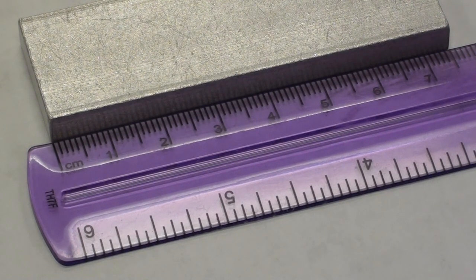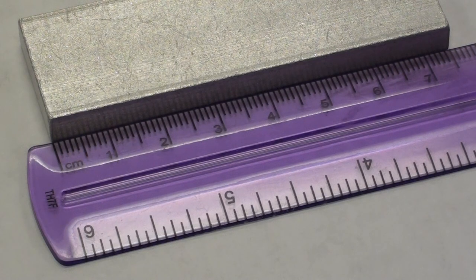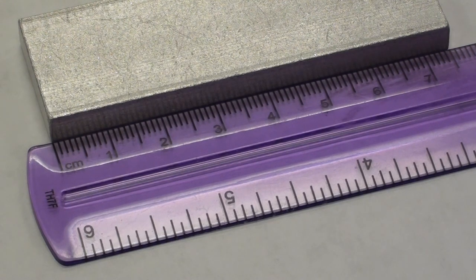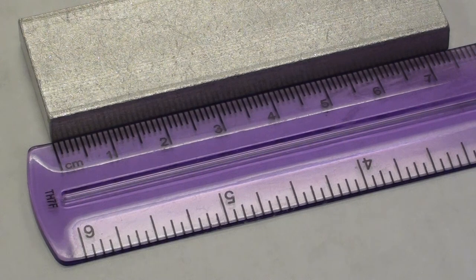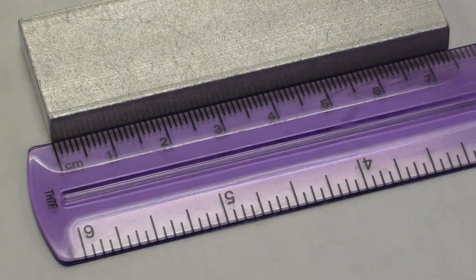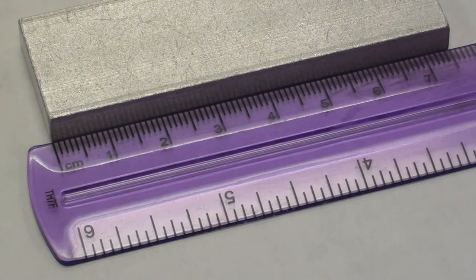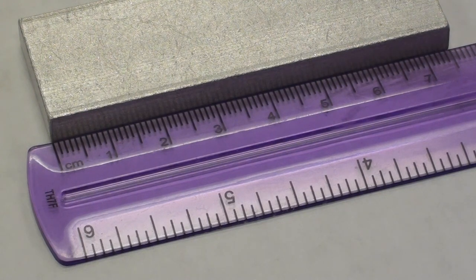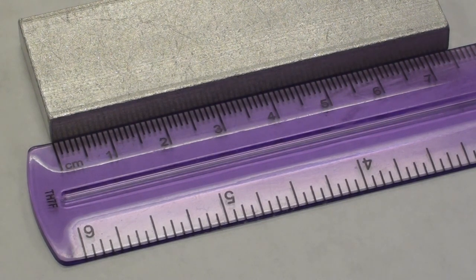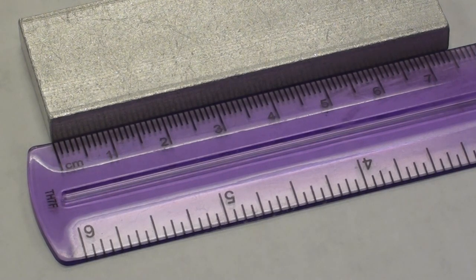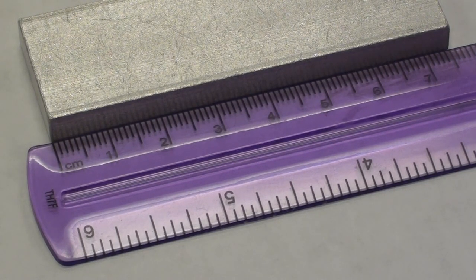If you look at the ruler we've got zero, one, two, three, but between each of them there's ten graduations, which means each of those little lines is worth point one. In order to determine the precision to which we can measure with this device, we take the smallest graduation, which is point one, and we divide it by two. So it would be point zero five. So any measurement we make of this block is going to have to be to two decimal places.